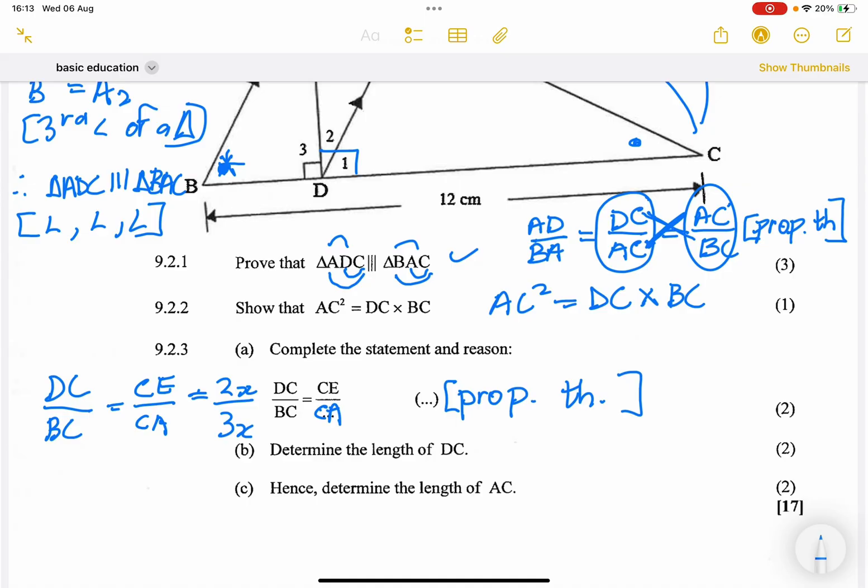That's going to be 2X over 3X. Remember, where does that come from? We said that's the proportionality theorem, but we've already proven that. Okay, so DC is what we're looking for. We know is equal to 2 over 3. We can cancel out the ratios there.